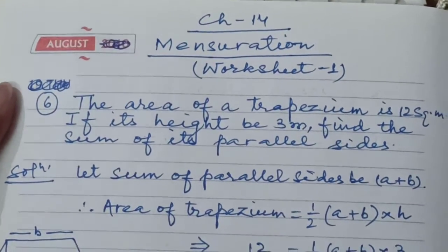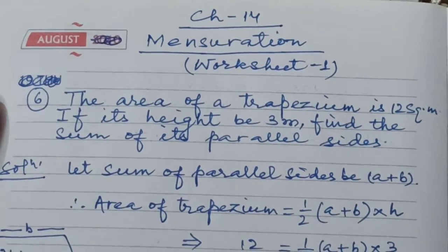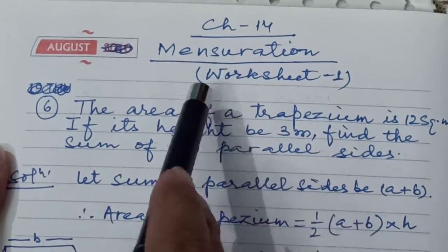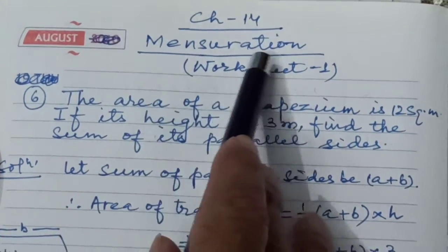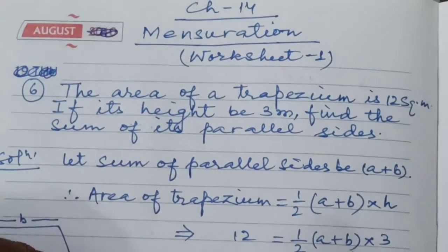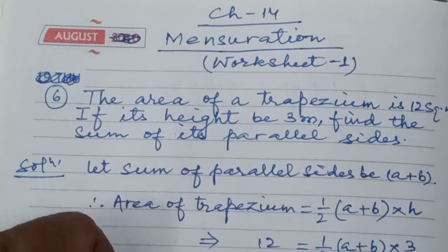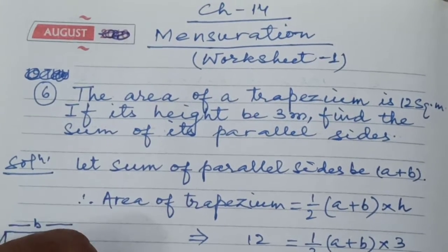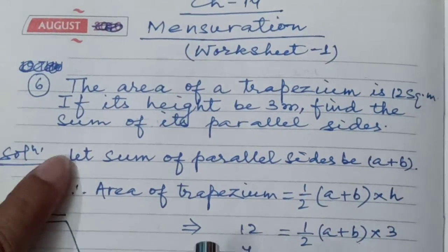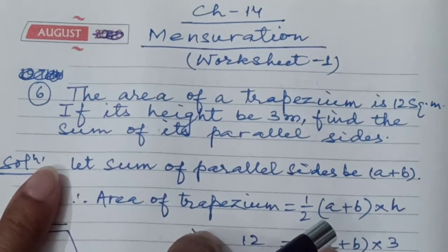Good morning students. Today I am going to discuss chapter 14: Mensuration. Mensuration is known as 'Chhetra Mithi' in Hindi. It means measurement of area — 'Chhetra' means area and 'Mithi' means measurement.